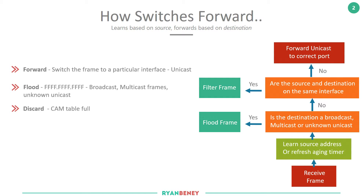Once that's been learned — and if it's already learned it's refreshed against the timer — it then looks at the destination. If the destination is a broadcast, multicast, or an unknown unicast, the frame is flooded. If it's not, a second question comes to mind: is the source and destination on the same interface? If it is, the frame is filtered because we can't send traffic out the way it came in. And if it's none of those then it must be unicast traffic — one to one — and we must know where the destination resides so we can send it to the correct port. Understanding that and moving on to ARP will help cement how hosts communicate on the local network.